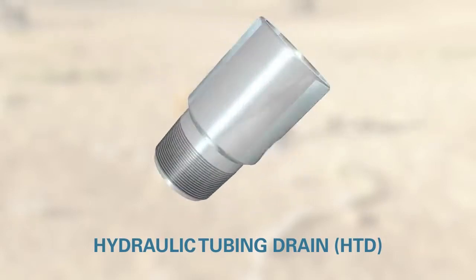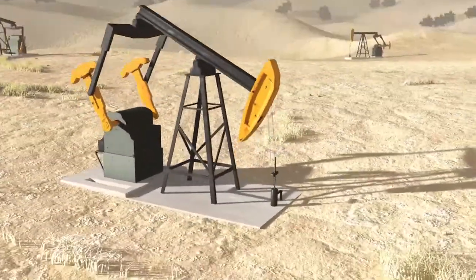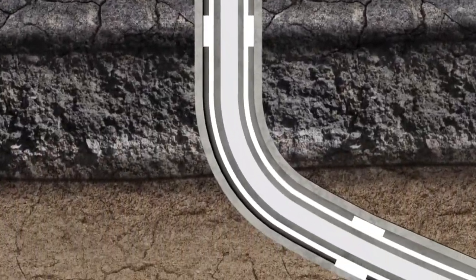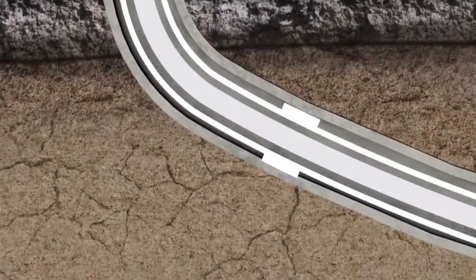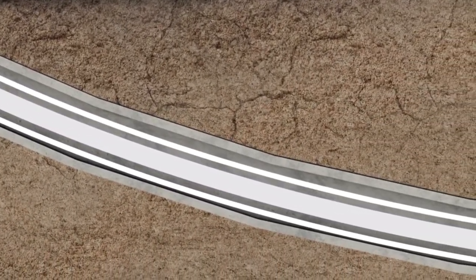provides a positive method to equalize the fluid level in tubing strings without mechanical manipulation. The HTD utilizes ruptured disc technology to provide accurate and reliable actuation of drain openings downhole, and has been used in many types of wells to eliminate the potential hazards associated with pulling wet tubing strings.